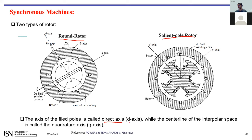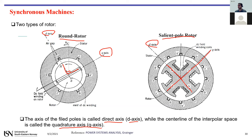It's important to know the d-axis and q-axis. The direct axis is called the d-axis, and the axis perpendicular to it — 90 degrees lag — is the q-axis (quadrature axis). These two axes are defined based on the rotor position and are perpendicular to each other, both for round and salient pole rotors. The q-axis is 90 degrees behind the d-axis.